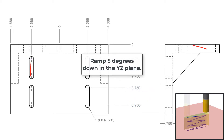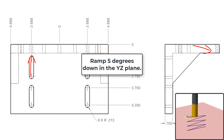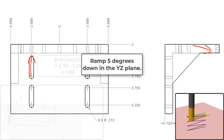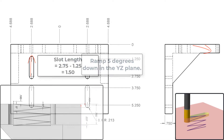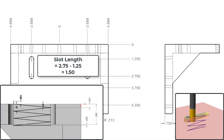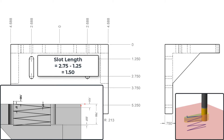To rough the slot, I'll feed the tool in the YZ axis causing it to ramp down into the part. As stated in the previous videos, I'll not exceed a 5 degree angle as I do not wish to break my tool. To calculate the depth of the tool at the end of the 5 degree ramp, I'll use trigonometry.